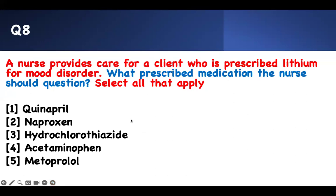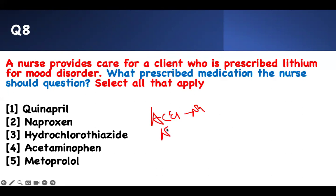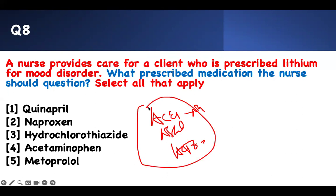Number eight: a nurse provides care for a client prescribed lithium for a mood disorder — which prescribed medication should the nurse question? Lithium affects the kidneys, so any drug that further stresses renal function worsens lithium toxicity. You should not take ACE inhibitors — related to sodium balance. You should not take NSAIDs — they affect the kidneys. You should not take hydrochlorothiazide — a diuretic that worsens kidney function. Beta blockers and acetaminophen do not affect the kidneys or worsen lithium. So ACE inhibitor, NSAID, and hydrochlorothiazide are the correct answers.